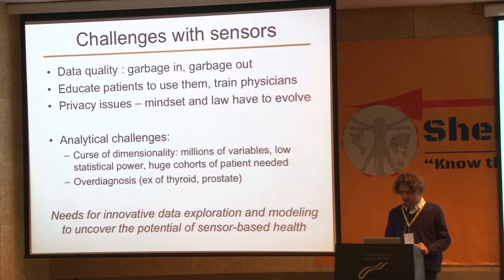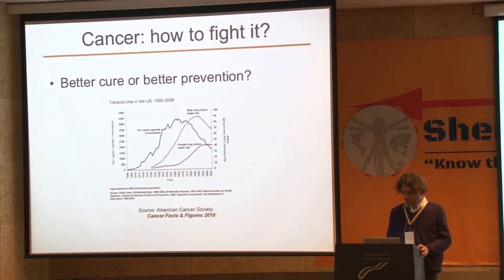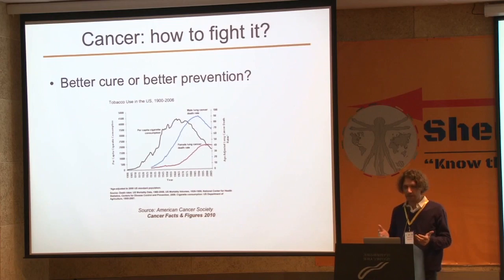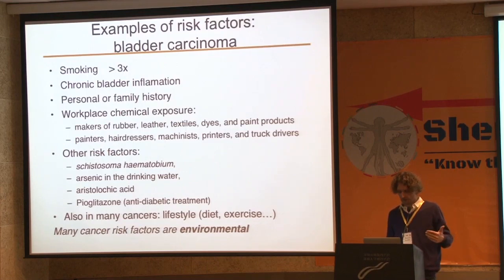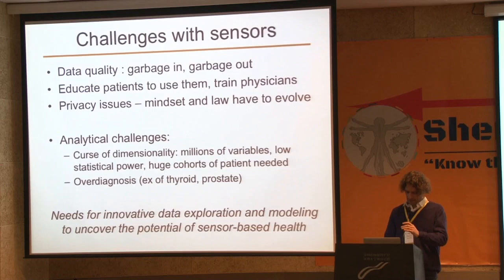There are also analytical challenges. If you want to make sense of all this information, there are several problems we have to deal with. The first is known as the curse of dimensionality. With sensors you can measure millions of variables and combine them, meaning you have billions of variables. If you have one variable like tobacco consumption and relate it to cancer, the correlation is clear. But if you have billions of variables, just by chance you might find one that shows a spurious correlation with cancer risk — and that doesn't mean it's a causation of cancer.